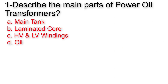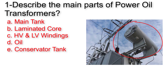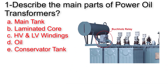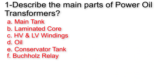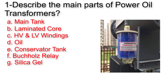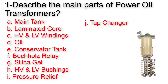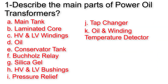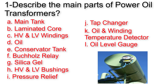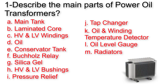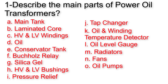Another part is the conservator tank, which is connected to the main tank by a connection pipe, which has the Buchholz relay. Also, we have silica gel, high voltage and low voltage bushings, a pressure relief, tap changer, oil and winding temperature detector, oil level gauge, and radiators. We could also have fans and oil pumps in case of ONAF, OFAN, or OFAF cooling methods.